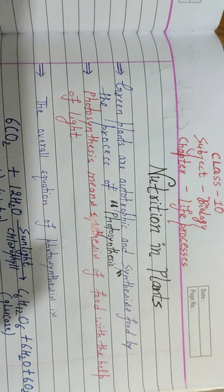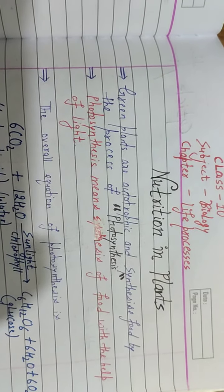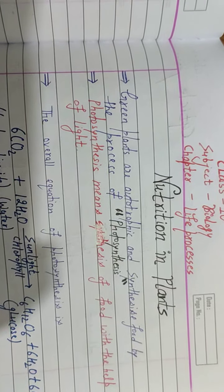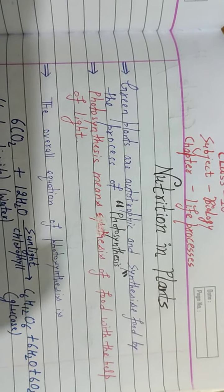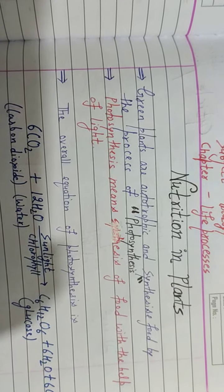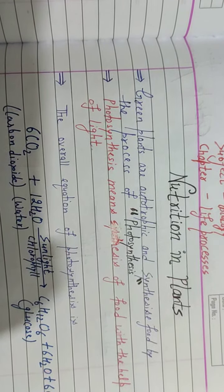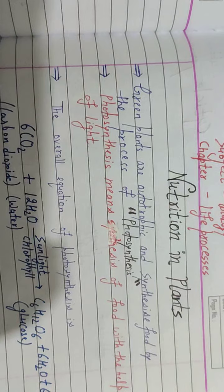Hello everyone, so in previous lecture we studied about what are life processes and what is nutrition. Today's topic is nutrition in plants. Green plants are autotrophic, that means they prepare their own food and this process is known as photosynthesis.